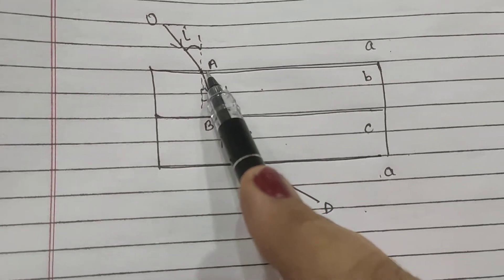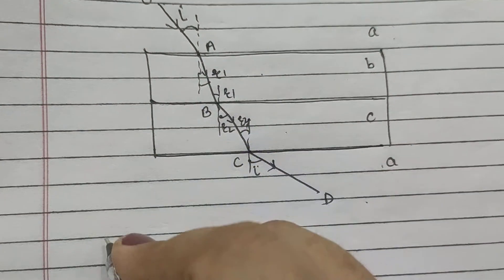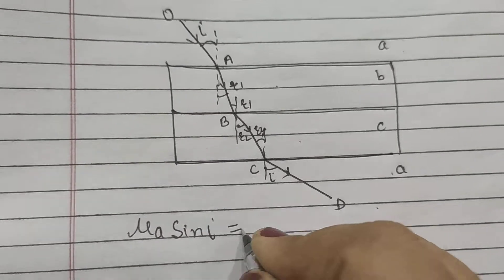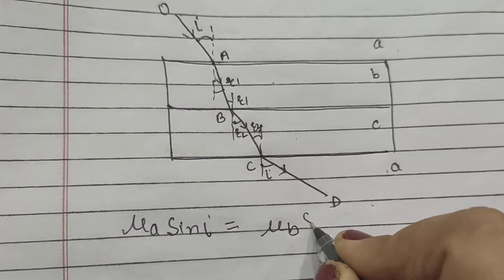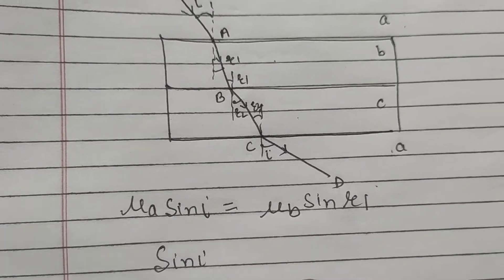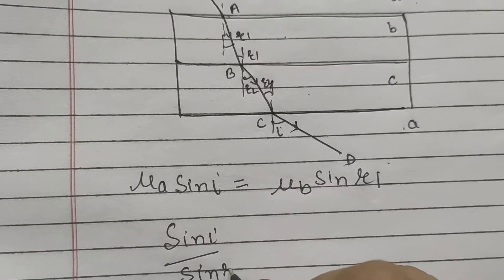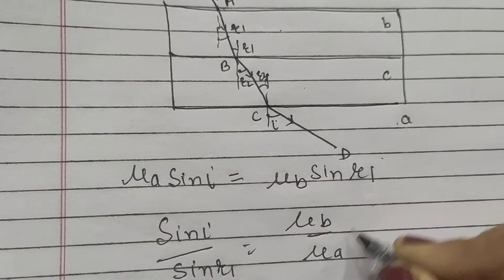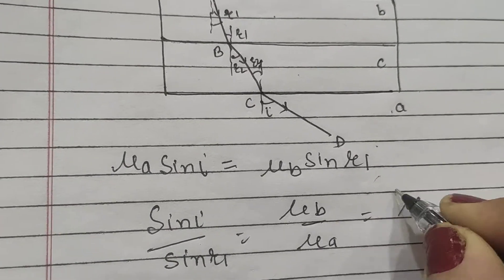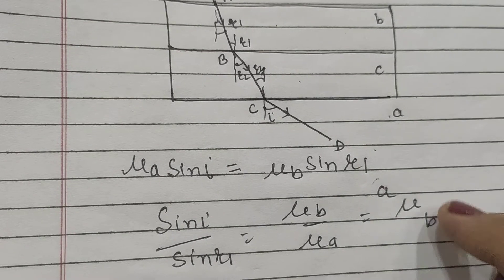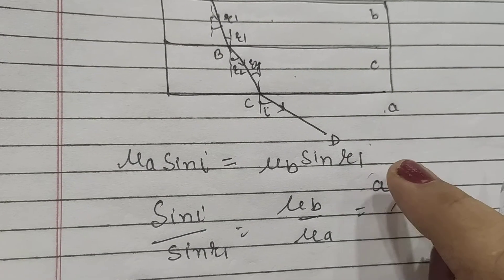Now applying Snell's law at A: mu A sine I is equal to mu B sine R1. Accordingly we can write sine I by sine R1 is equal to mu B by mu A. That can be written as A up and B down, meaning light is entering from A to B, and this is the refractive index of medium B with respect to medium A. Let me give it number 1.